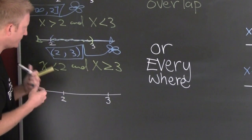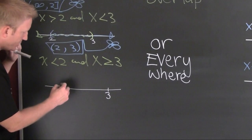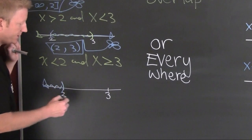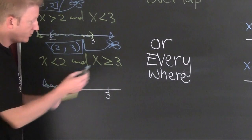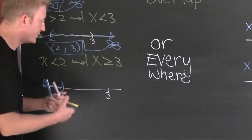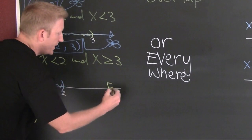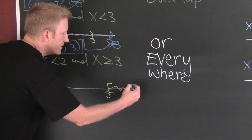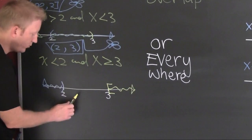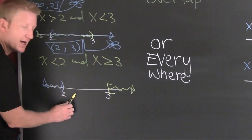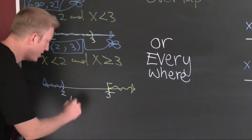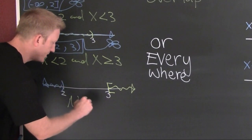On the two I'm gonna shade to the left, and on the three it looks like we're gonna include it and shade to the right. This is the AND case — where do those overlap? They never overlap. This is no solution.